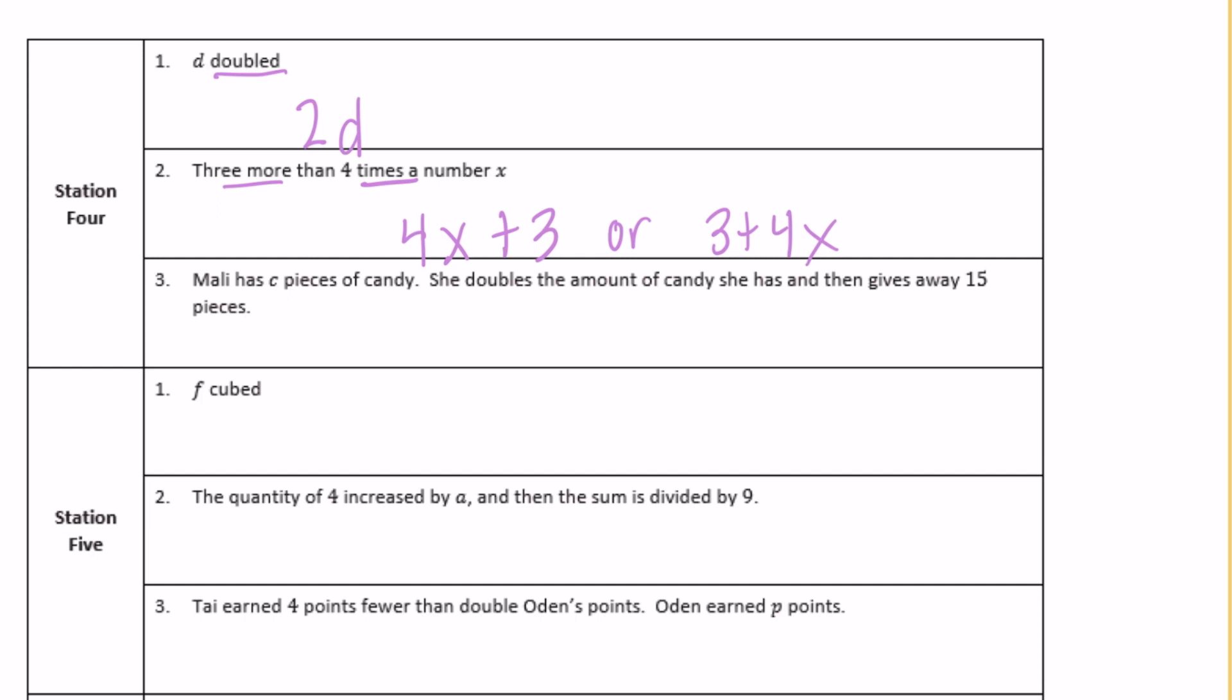Number three, Mally has c pieces of candy. She doubles the amount of candy she has and then gives away 15 pieces. She has c pieces, she doubles that, so 2c, then gives away 15 pieces, so minus 15: 2c minus 15.